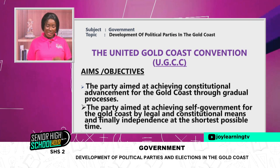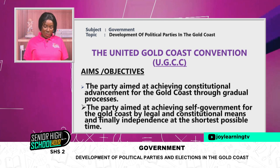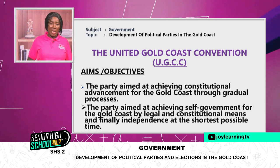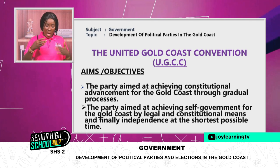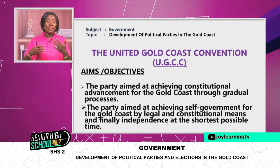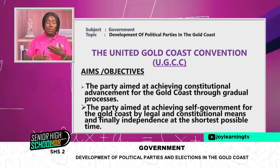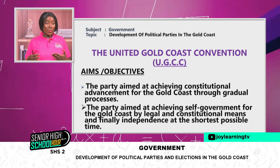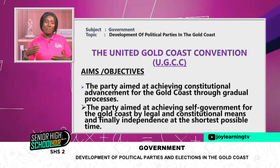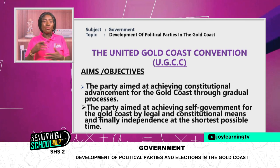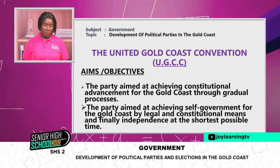One of their aims was that the party aimed at achieving constitutional advancement for the Gold Coast through gradual processes. They preferred constitutional measures. They desired independence, but said it should be a gradual process. The administrators of the colony had been there since 1844 and to take over administration must be done step by step.